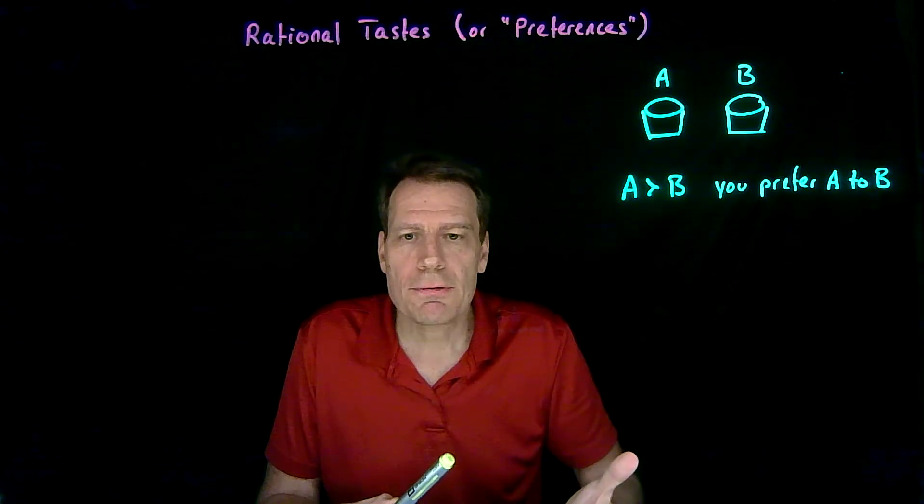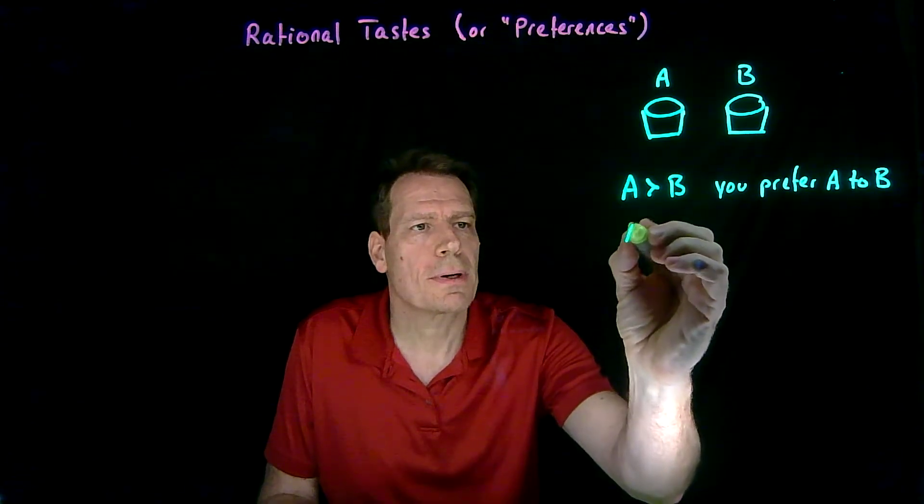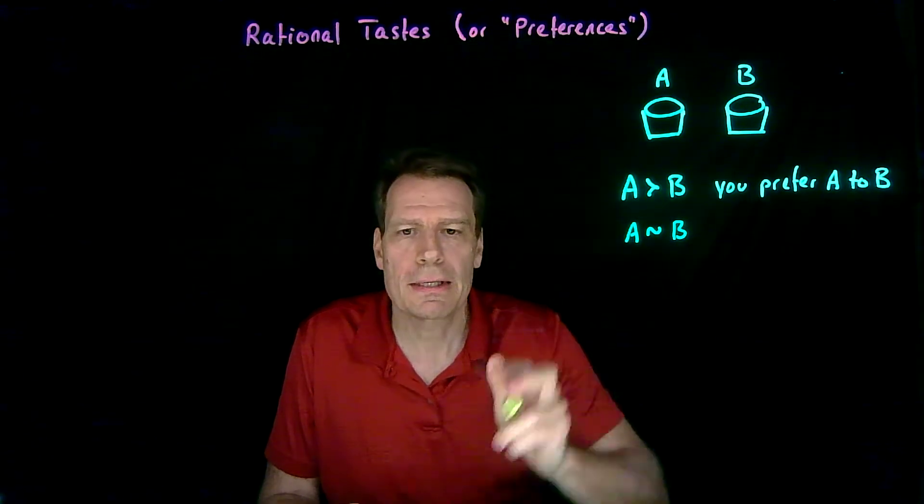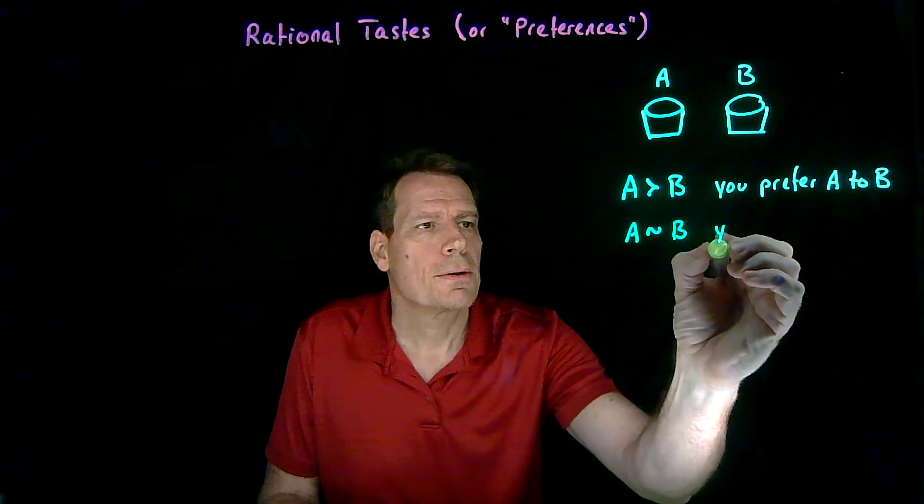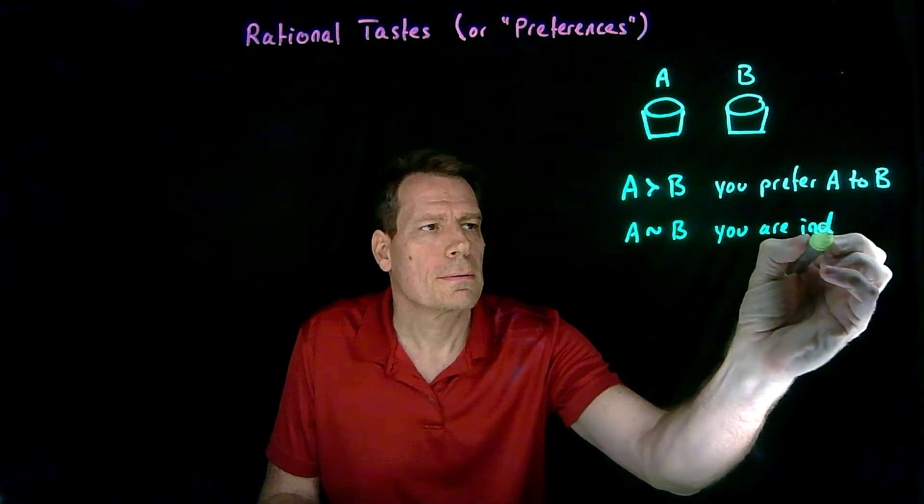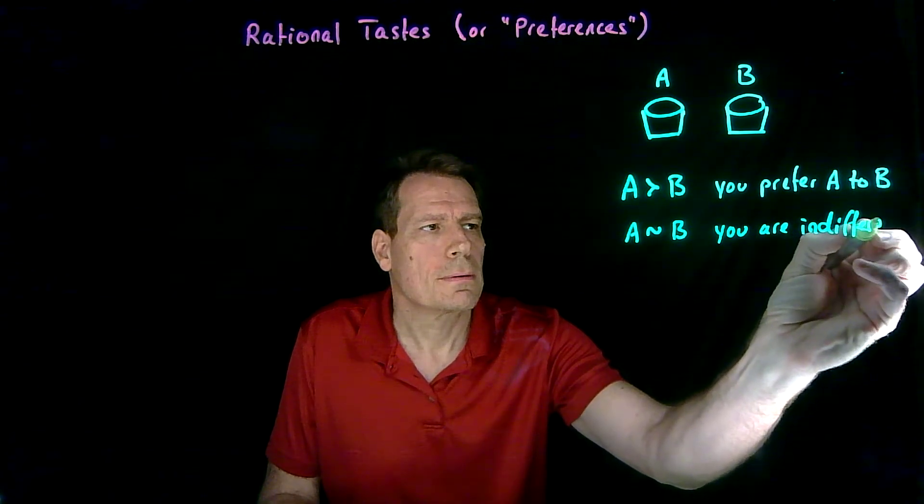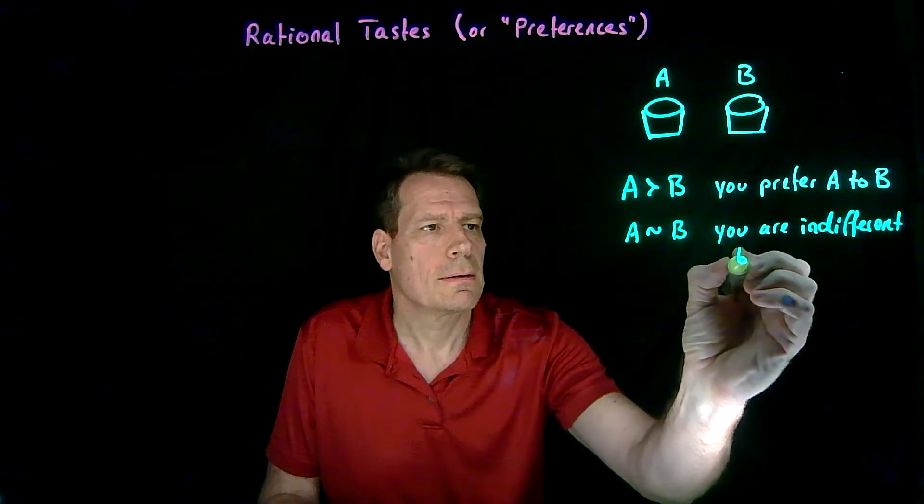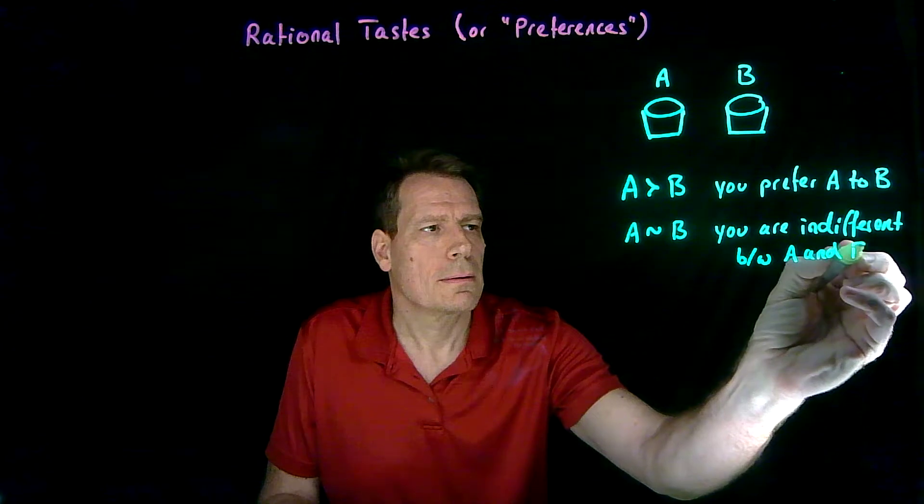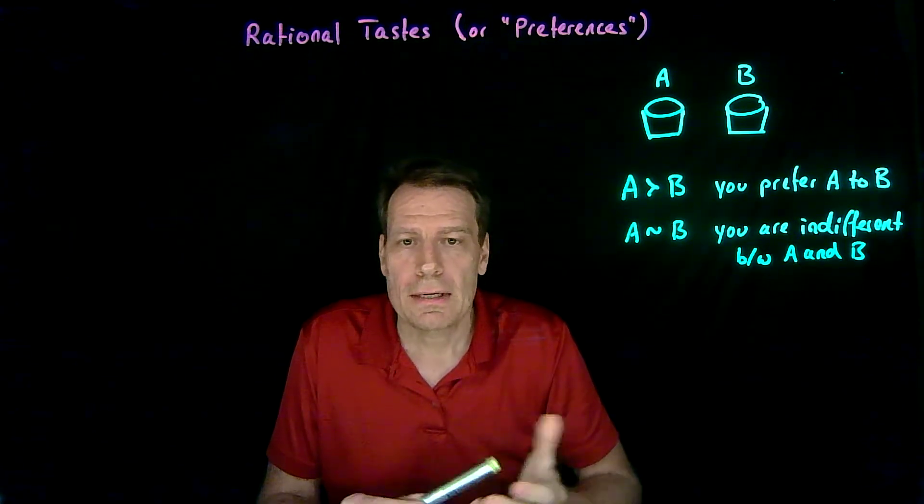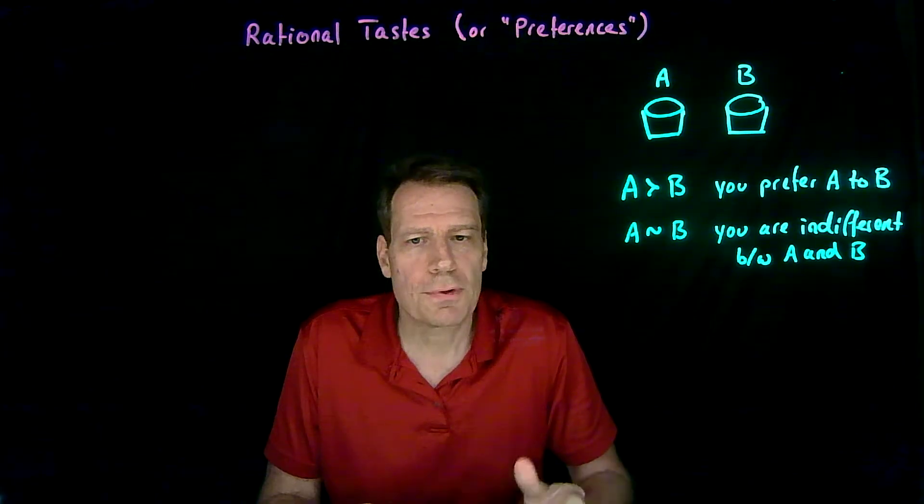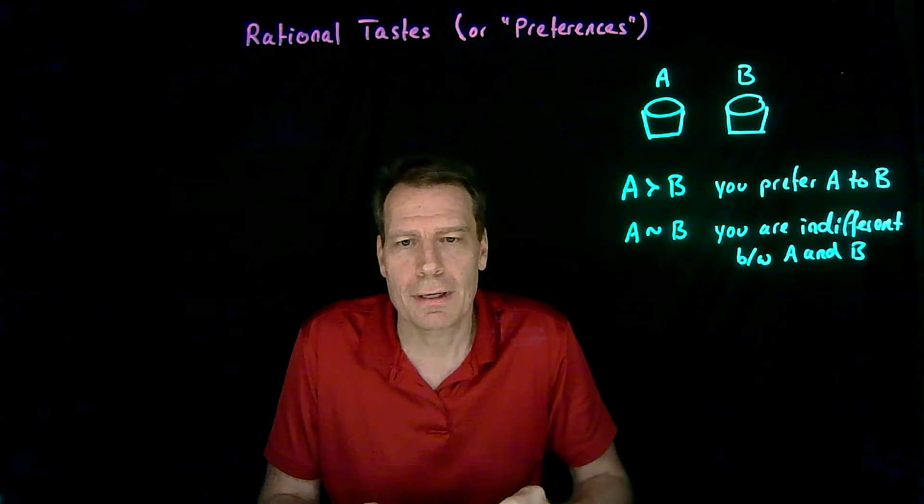Sometimes you might be indifferent between two baskets. We're going to write that this way. So this little squiggly line means you are indifferent between A and B. In other words, if I give you a choice between A and B, you say I really don't care. You could flip a coin and give me whichever one comes up heads.